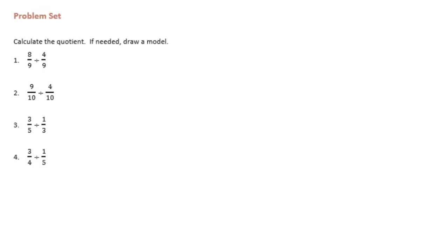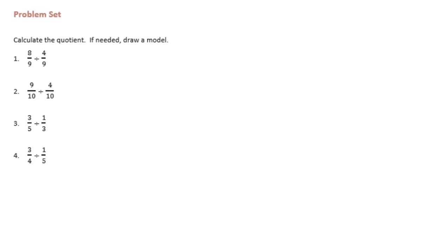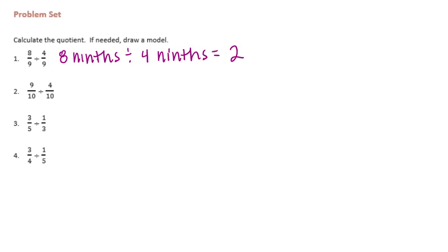First we have eight-ninths divided by four-ninths. Since those have the same denominator, we don't need to find a common denominator. Eight divided by four is two, so the answer is two.